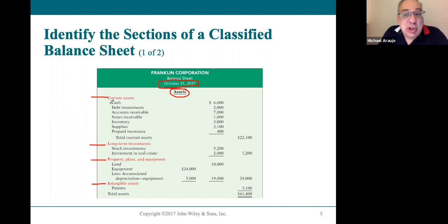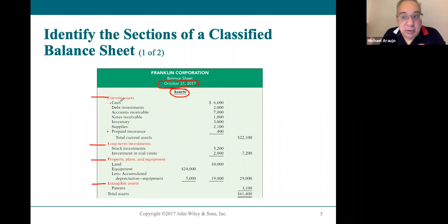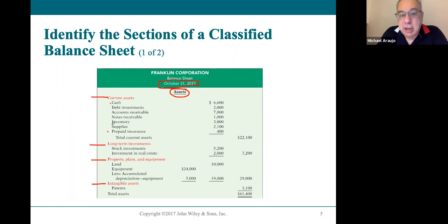Current assets are assets that will be turned into cash within the year, or used and expensed quickly within the year. There's a pecking order — a liquidity order — for current assets. Cash is first because it's already the most liquid asset you can have. You need cash to pay bills and buy things.